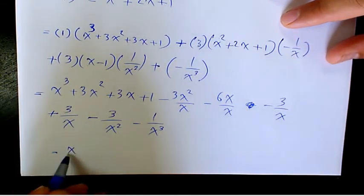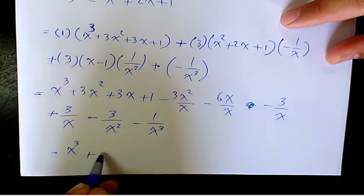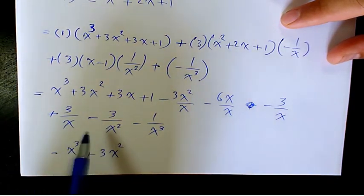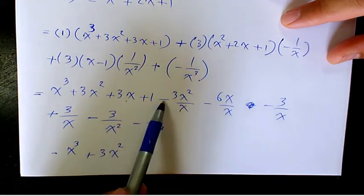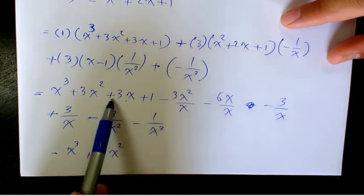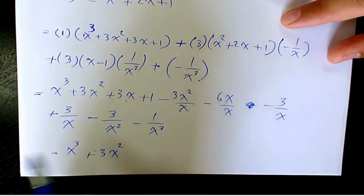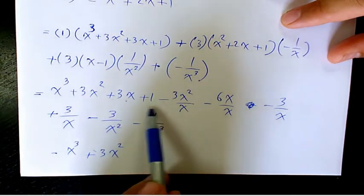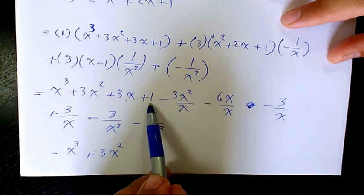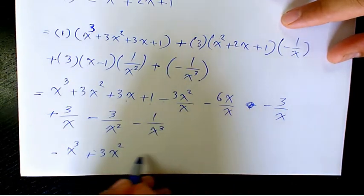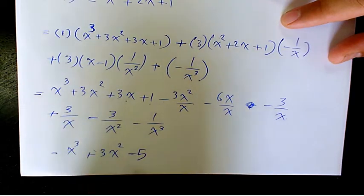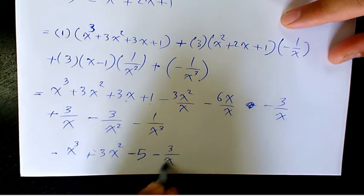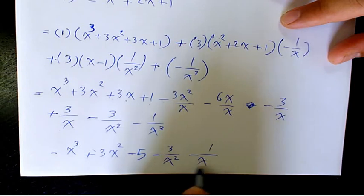Now we simplify. We have x³, and 3x². For the x terms: negative 3x and positive 3x cancel out, so there's no x term. For the constant terms: 1 and negative 6 gives negative 5. Then negative 3/x and positive 3/x cancel out. So we're left with negative 3/x² minus 1/x³.